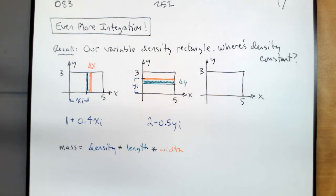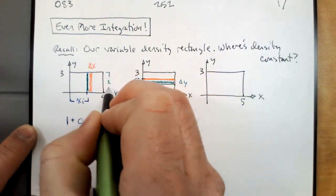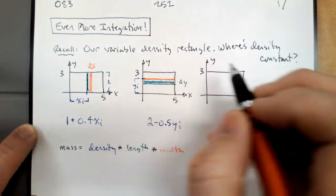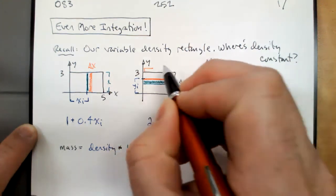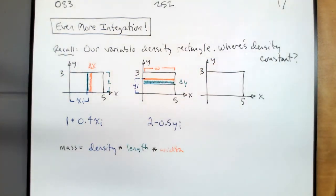In the first case, mass equals density times length times width: the length was the constant 3, or the difference in functions when we had the triangle or parabola, and the width is delta x. In the second case, with density 2 minus 0.5y, the length is delta y and the width is the constant 5. All along that width, the density is the same — we just need that small change in y, and then we multiply density times length times width.